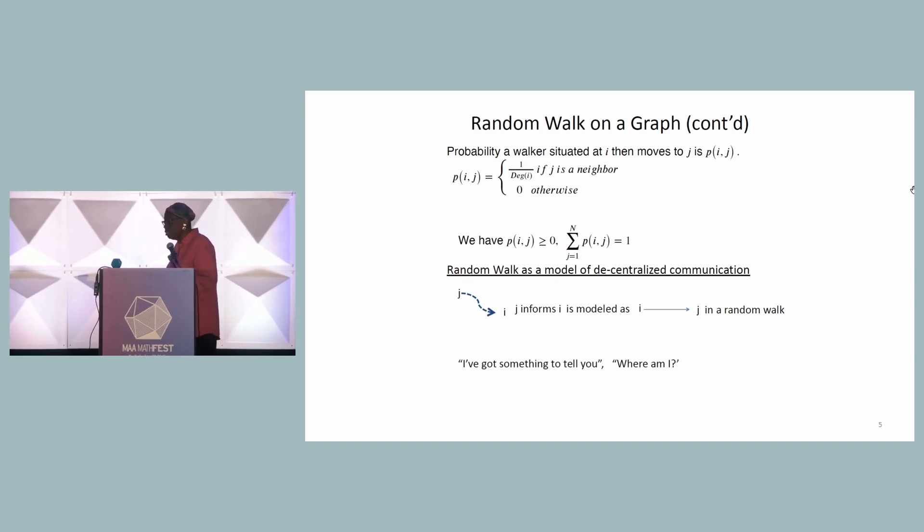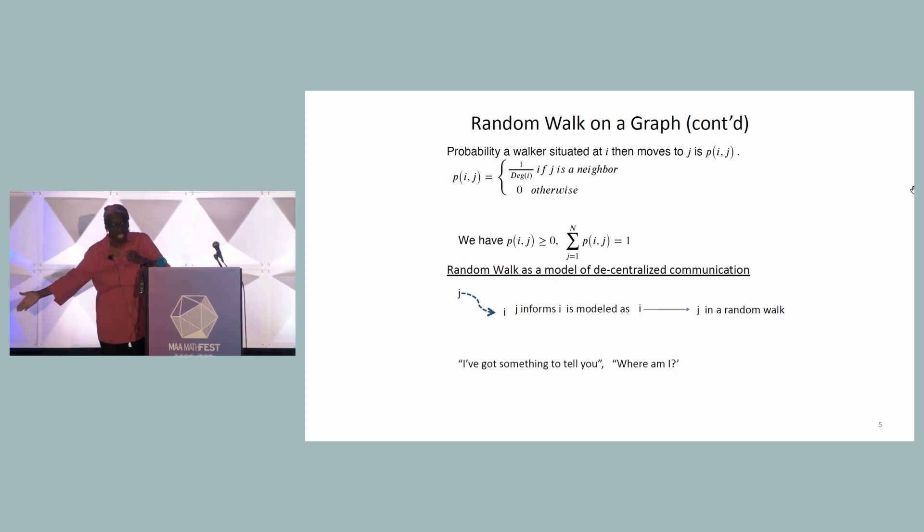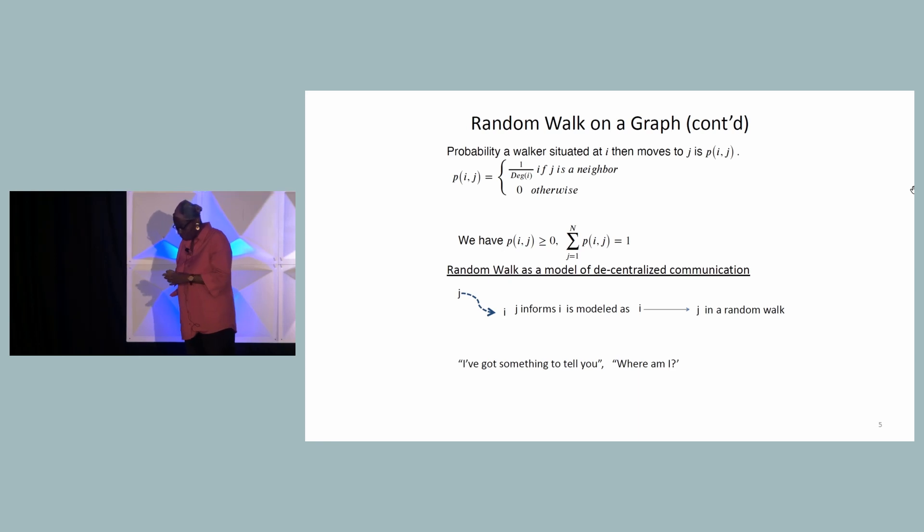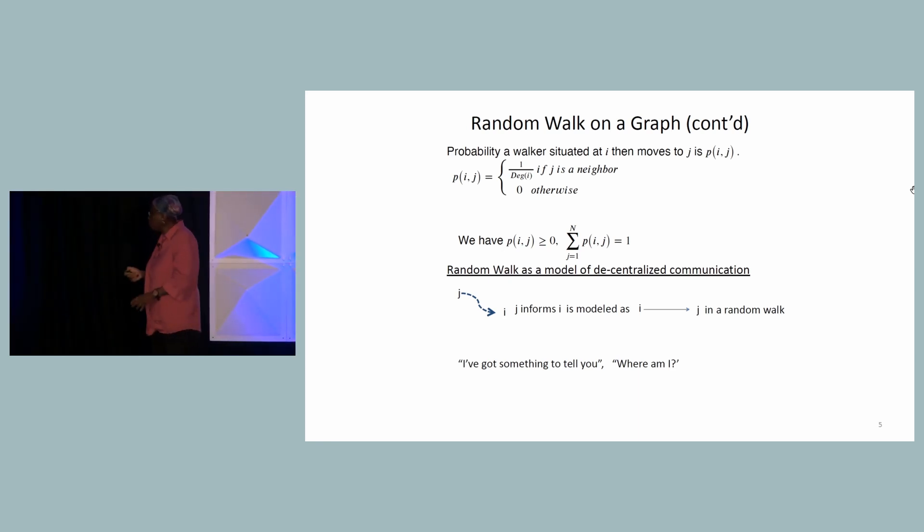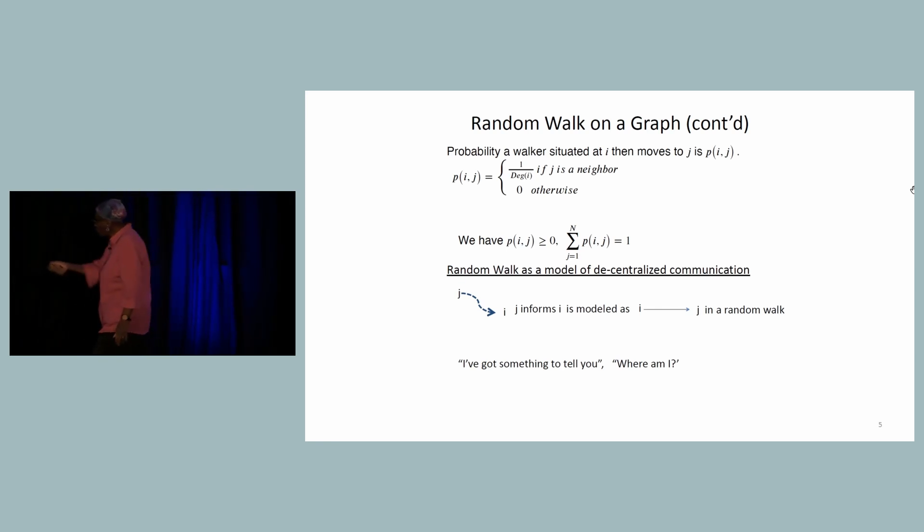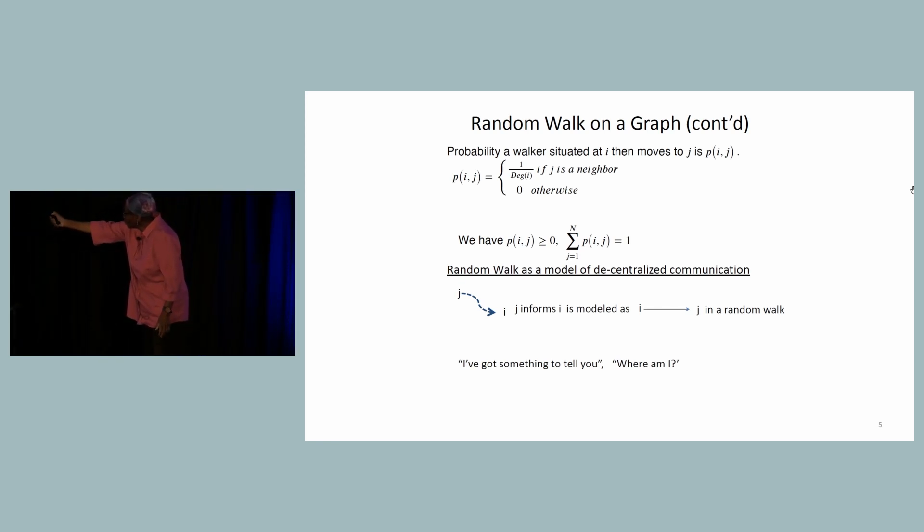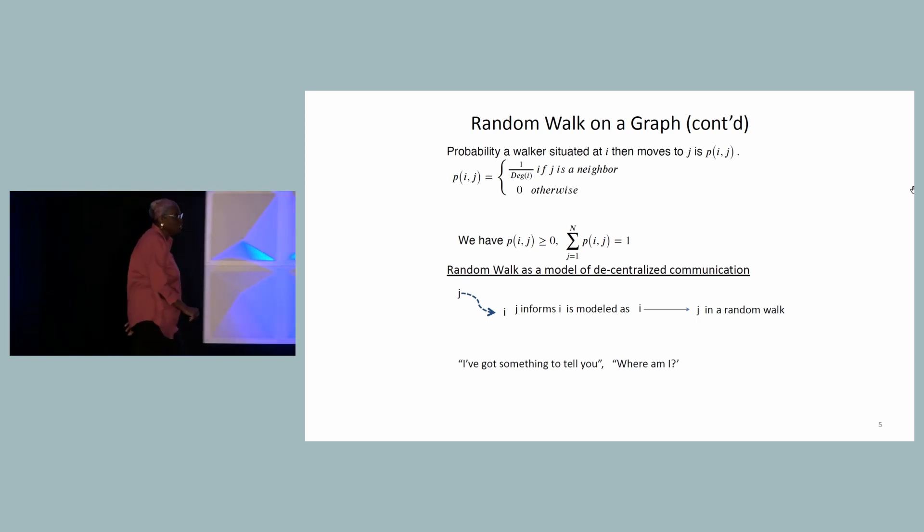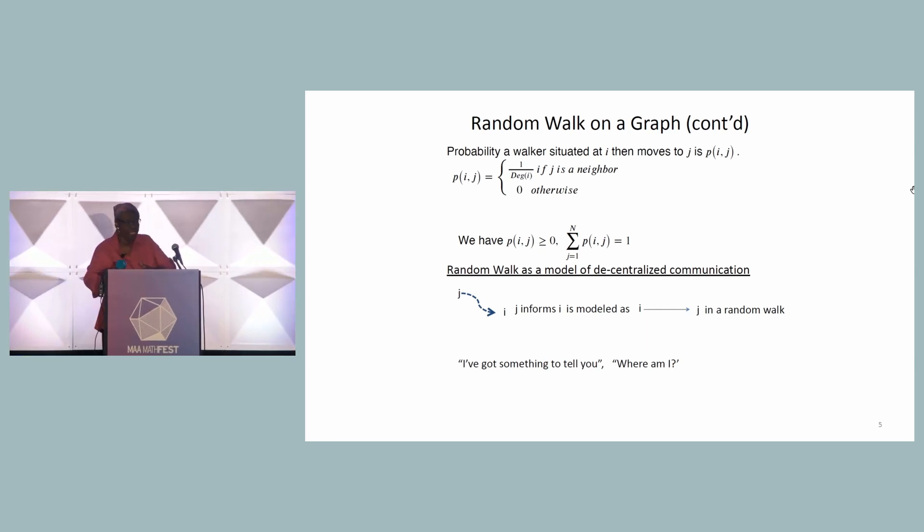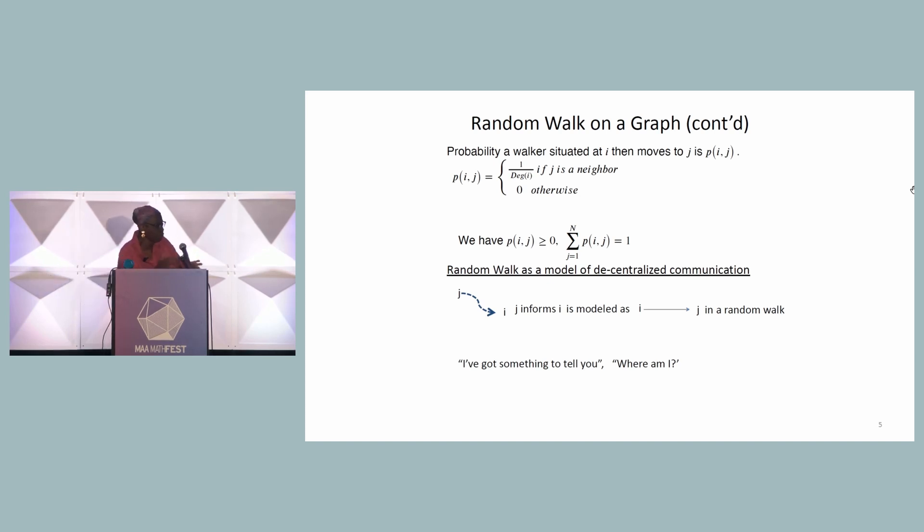From the point of view of communication, you're moving from vertex I to J, that means essentially that there is a message at vertex J, and that moves to vertex I. So the direction of the random walk from I to J is the opposite to the direction of the communication of information. It goes from J to I.